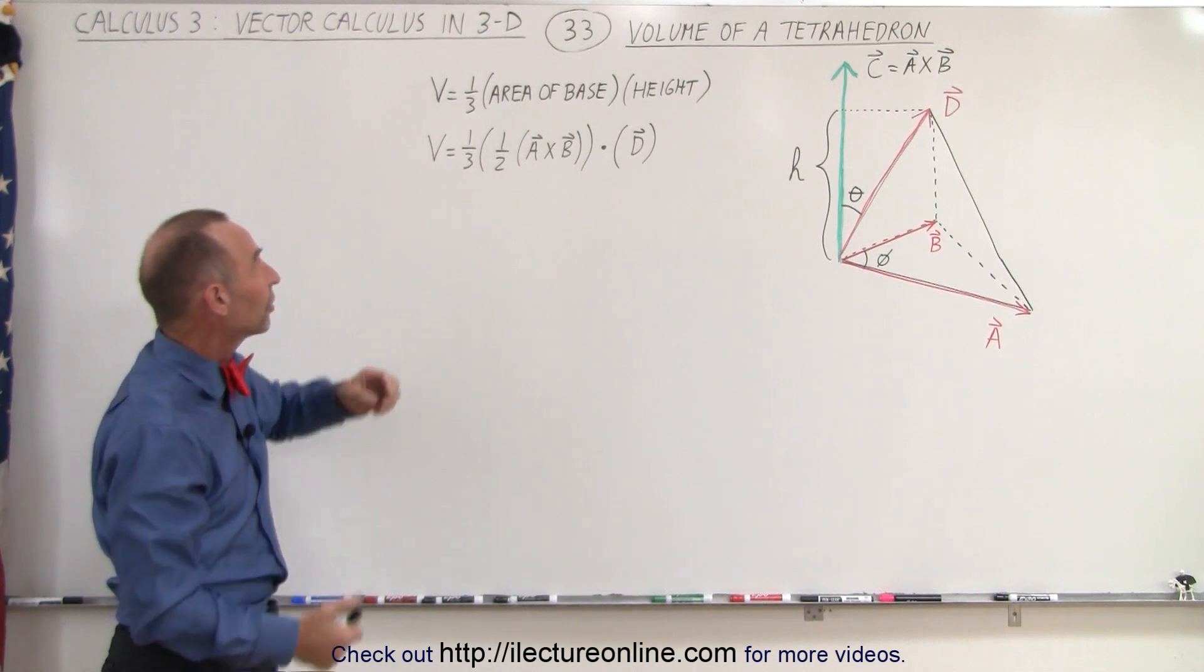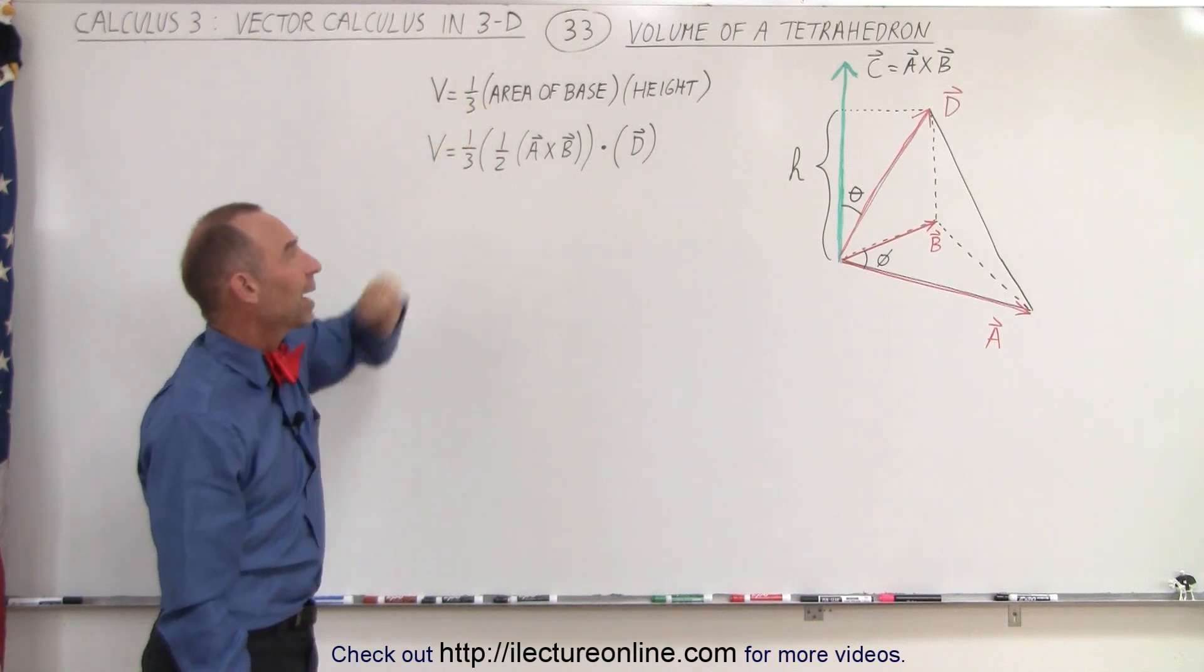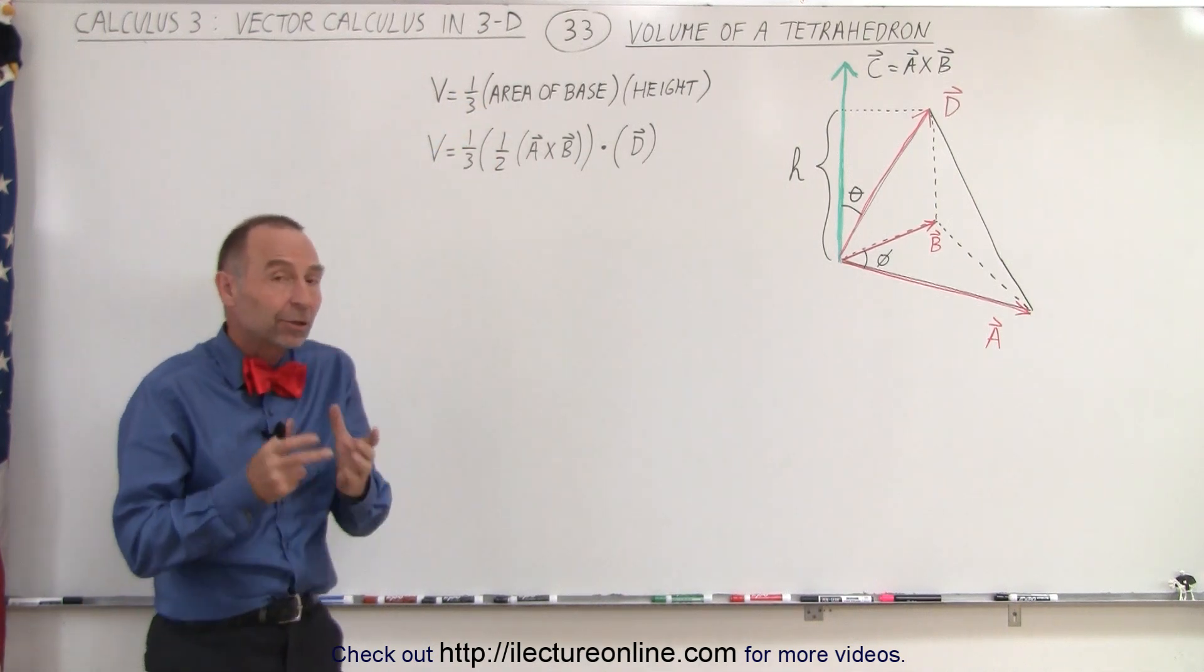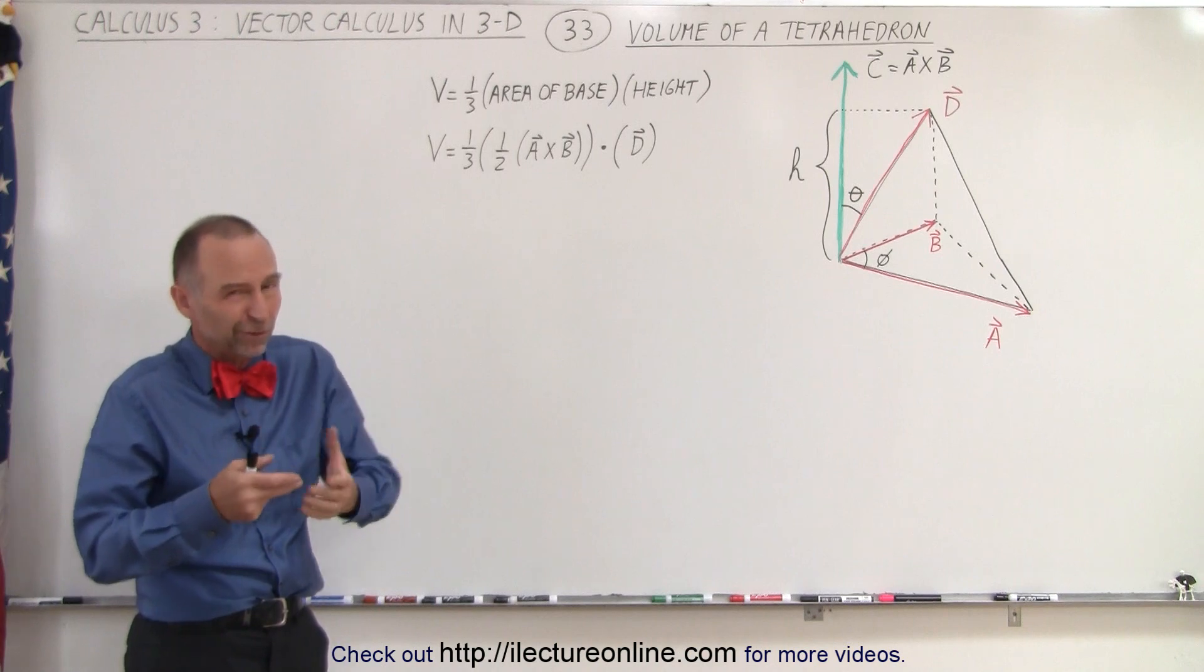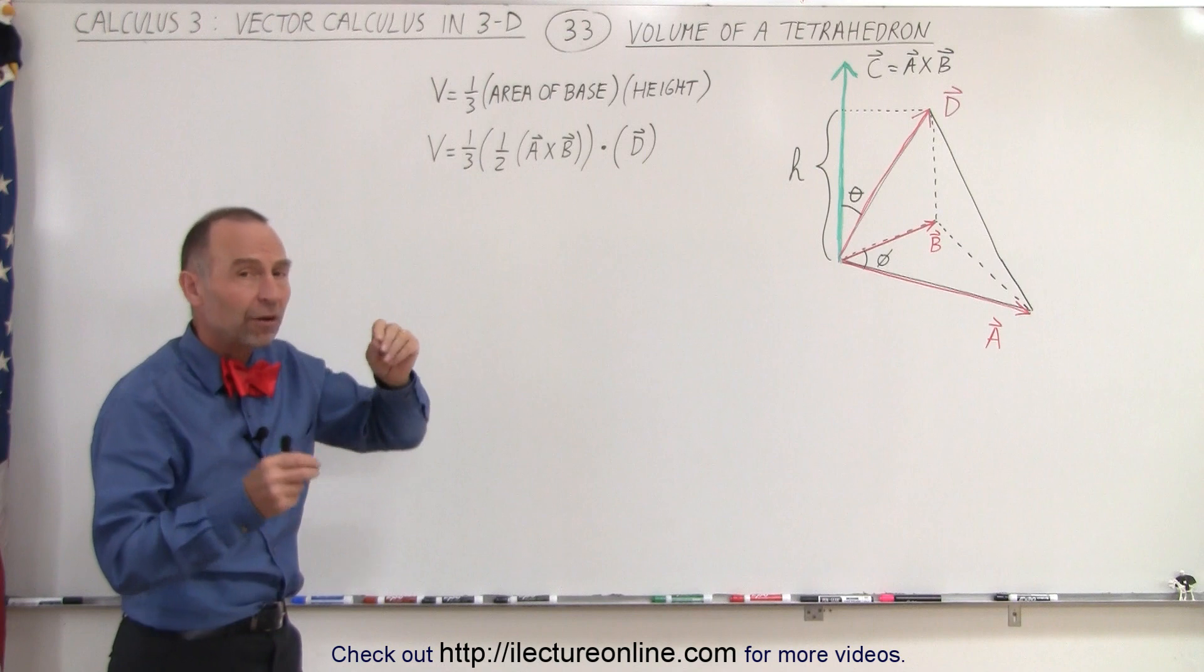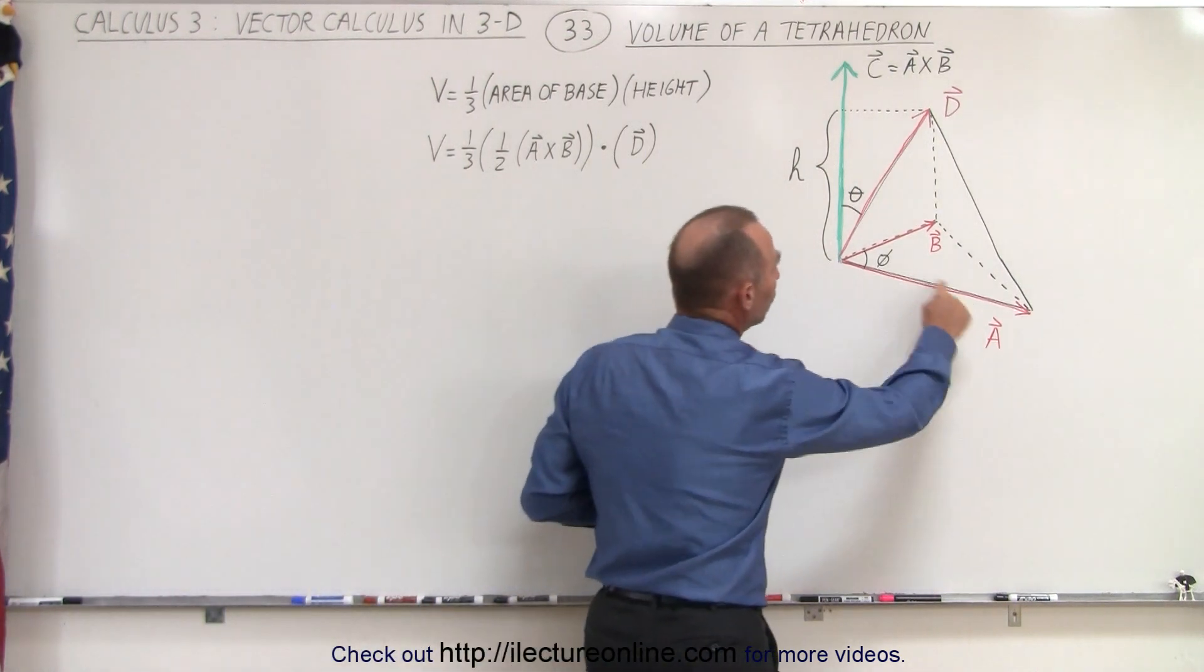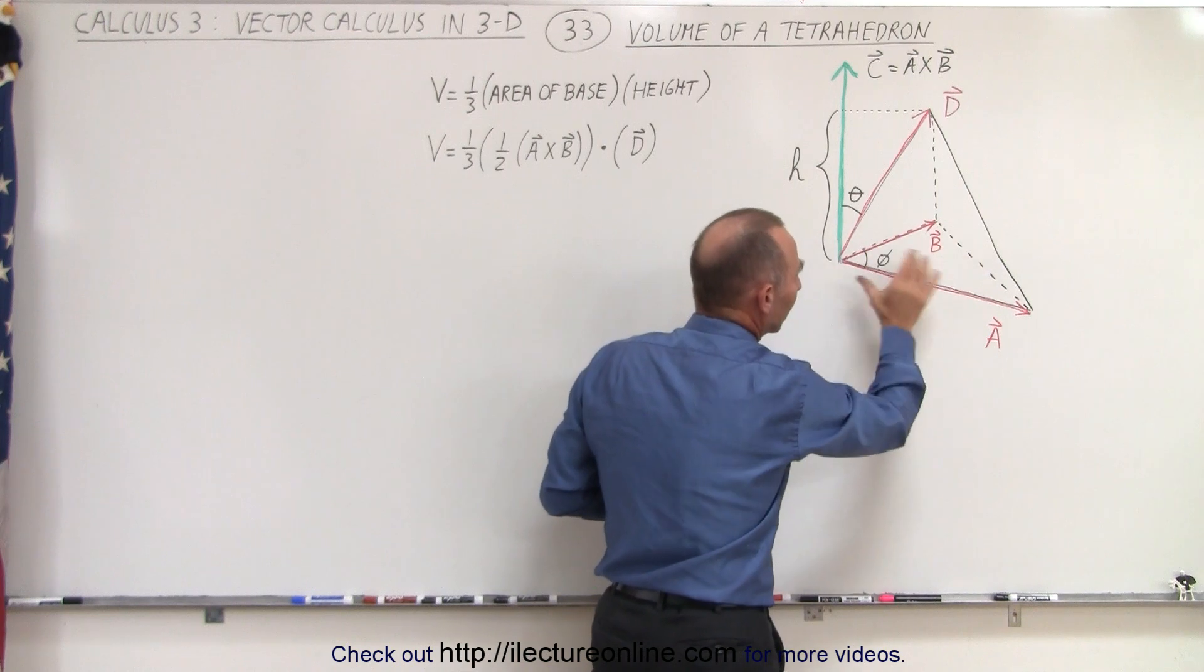So the volume, geometrically, of something like that is equal to one-third the area of the base times the height. Now the area of the base, since it's a triangle, which is basically half of a parallelogram, can be found by taking half the cross product of the two vectors that represent two of the three sides of the triangle of the base.